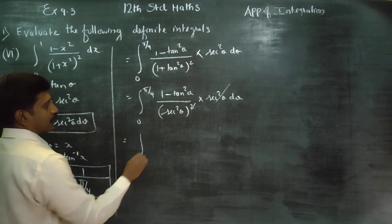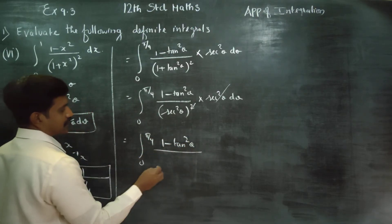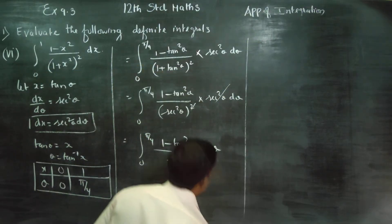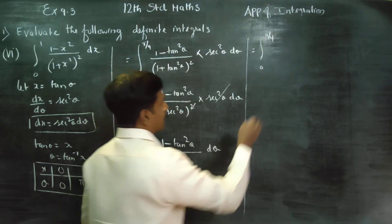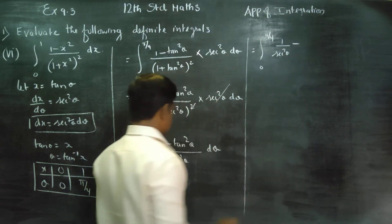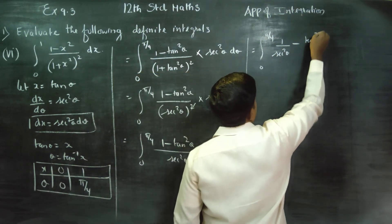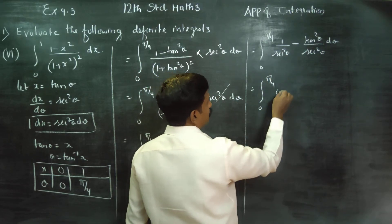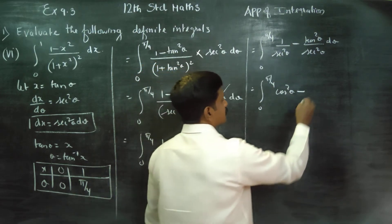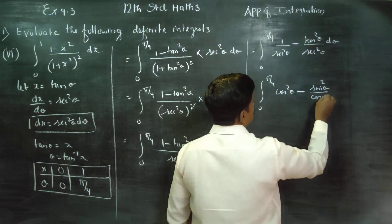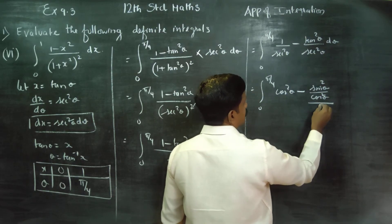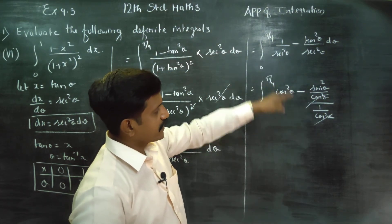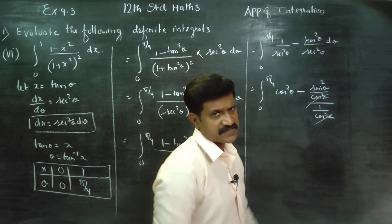The sec square theta in the numerator and denominator cancel. We get integration from 0 to pi by 4 of (1 minus tan square theta) by sec square theta d theta. Now, 1 by sec square theta is cos square theta, and tan square theta by sec square theta simplifies: tan is sin by cos, secant is 1 by cos, so after reciprocating, cos cancels. This gives cos square theta minus sin square theta.